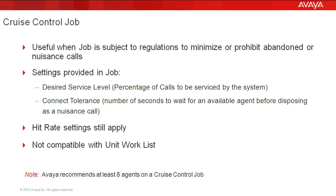Avaya Proactive Contact has two methods of call pacing: expert calling ratio and cruise control. The cruise control method is used when you have legal regulations to minimize or prohibit abandon or nuisance calls — calls where the customer is called by Avaya Proactive Contact but there is no available agent at that point, so the customer abandons the call or the proactive contact itself abandons the call.